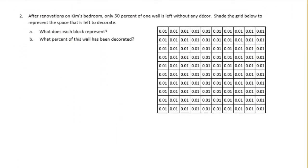Number two, after renovations on Kim's bedroom, only 30% of one wall is left without any decor. Shade the grid below to represent the space that is left to decorate. So after renovations, only 30% of the wall is left without any decor. Shade the grid to represent the space that's left to decorate.